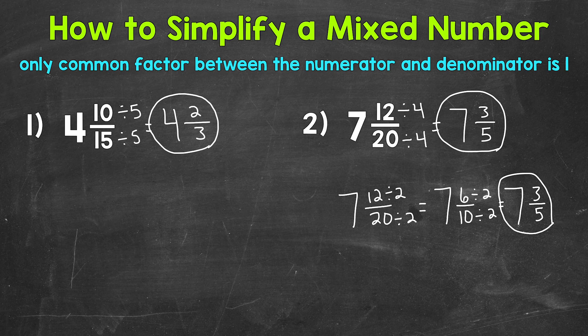When we divided by 4, we divided by the greatest common factor between 12 and 20. And we were able to simplify in one step. The bottom one, where we started by dividing by 2, we divided by something less than the greatest common factor. So simplifying took more than one step, which again is perfectly okay. We got to the same answer either way.